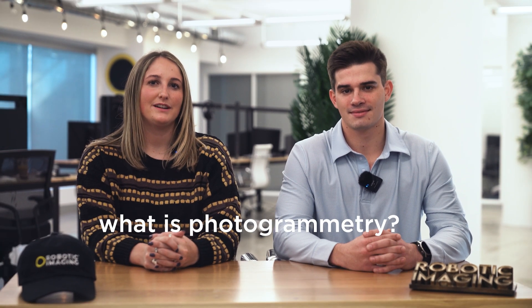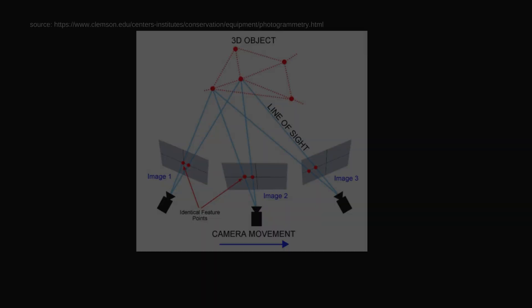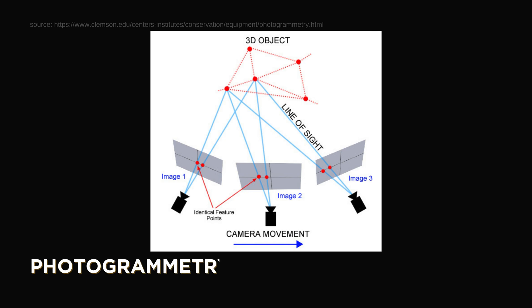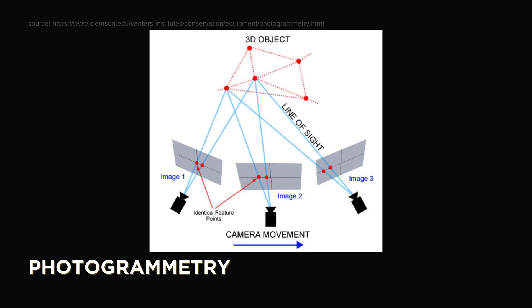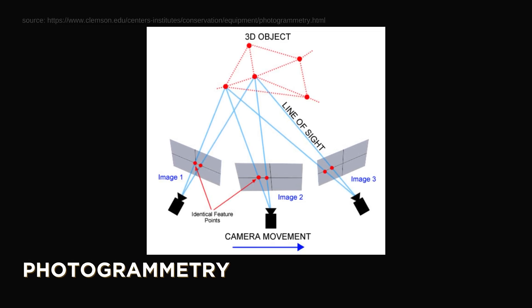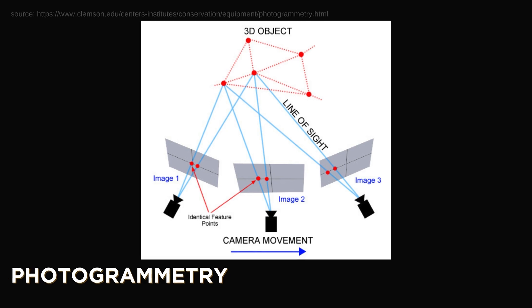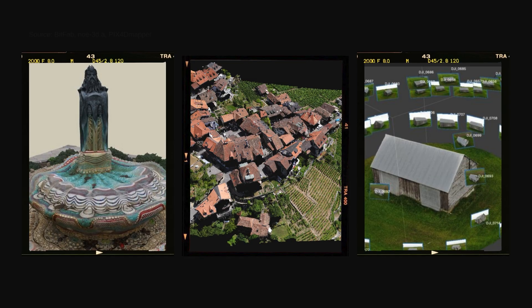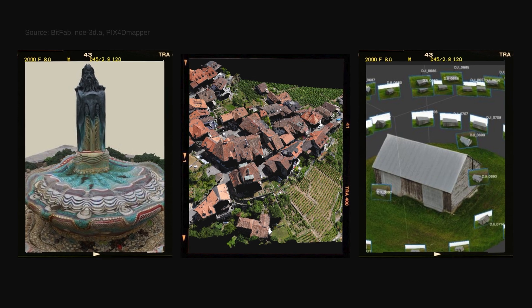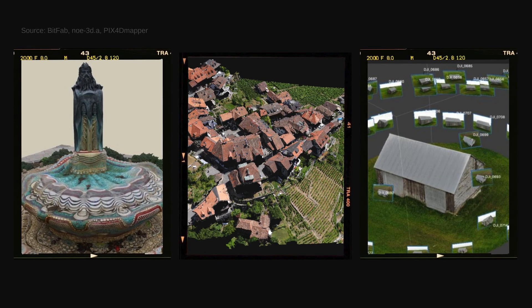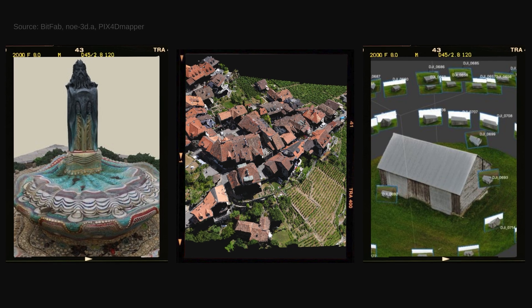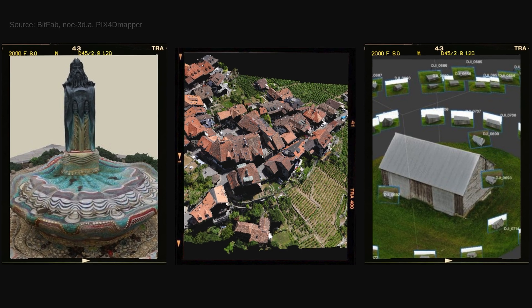What is photogrammetry? Photogrammetry is a technique that uses photographs to create 3D models. By analyzing the geometry and appearance of multiple overlapping images, software algorithms can reconstruct a detailed 3D representation of the object or scene being captured.